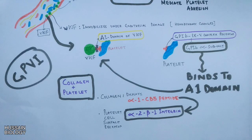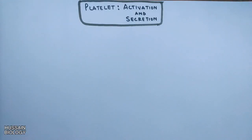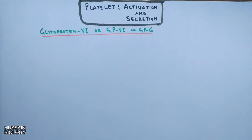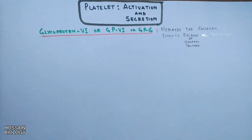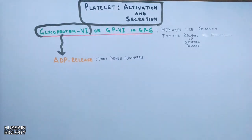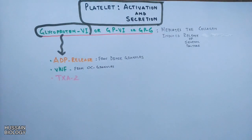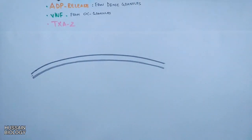Now let's get to the activation and secretion step. Glycoprotein 6 (GP6) present on the platelets gets activated upon endothelial damage. GP6 is a receptor for collagen and mediates collagen-induced release of several factors from platelets. Activated platelets release ADP molecules from dense granules, VWF from alpha granules, and also secrete thromboxane. This ADP will further activate platelets and aid in the granule secretion of clotting factors.